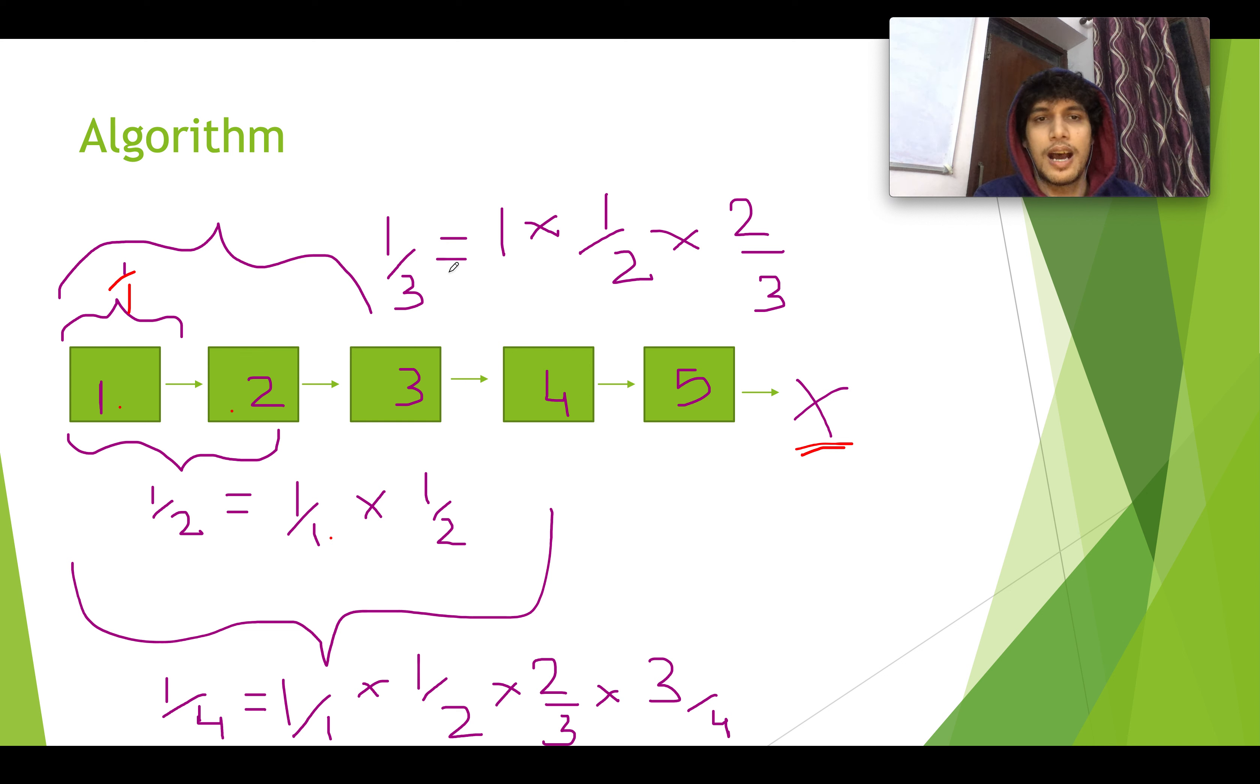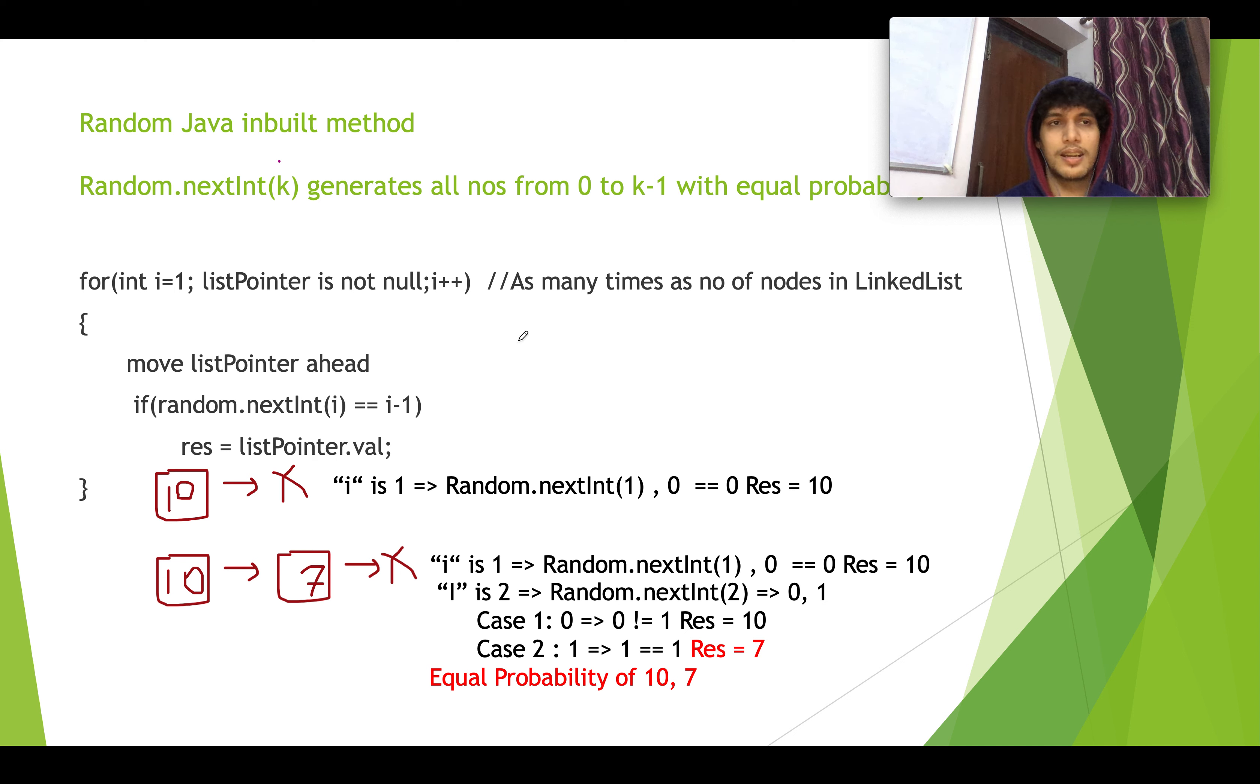If you take three nodes 1, 2, and 3, what is the probability of each node? 1 by 3. And how can 1 by 3 be represented? 1 into 1 by 2 into 2 by 3. So the probability of selecting 2 nodes, 1 and 2, into the probability of selecting the new node, that is 2 by 3. If you have 4 nodes, then the probability of choosing 1, 2, 3, or 4 is 1 by 4. And how can you represent it? 1 by 1 into 1 by 2 into 2 by 3 into 3 by 4, such that these two cancel each other and 3 cancels each other, and what you have in the end is 1 by 4. If you understood this expression, how we are writing it, then you are good and you will be able to understand the algorithm.